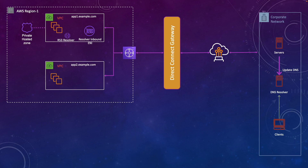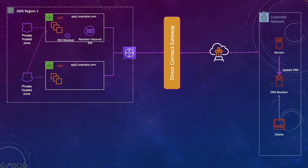Now what happens if you have another application in a different VPC, like app2.example.com? You have a private hosted zone associated with it that resolves the DNS to a native IP address. Do you need to create another resolver endpoint? No. You can simply associate this private hosted zone with the VPC where your resolver endpoint is already created. When a request for app2.example.com comes to the resolver endpoint, it checks the private hosted zones associated with that VPC one by one, resolves to the IP address, and sends it back. Once the on-prem server has the IP address and there is connectivity from on-prem to that VPC, it can reach the application. That's how you scale your resolver endpoint across multiple applications within the same region.